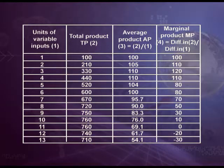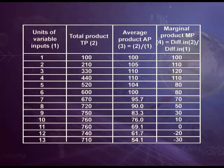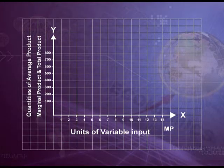Let us draw a four-column table to explain this law. The first column shows units of the variable factor — units of labour — from 1 to 13. The second column shows total product produced by labour. The third column shows average product, which equals total product divided by the number of units of variable input. The fourth column shows marginal product, which equals the difference in total product divided by the difference in quantity of variable factor. On the x-axis we take the units of variable factor, and on the y-axis the quantities of total product, average product, and marginal product.